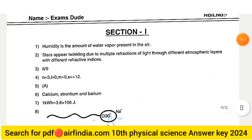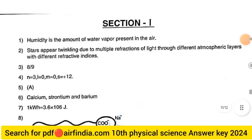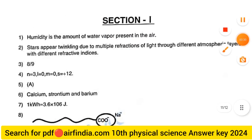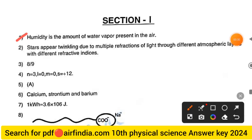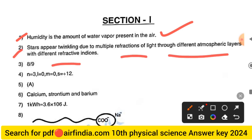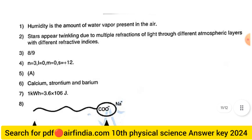Starting the answer key — Section 1. Question 1: Humidity is the amount of water vapor present in the air. Question 2: Stars appear twinkling due to multiple refractions of light through different atmospheric layers with different refractive indices.